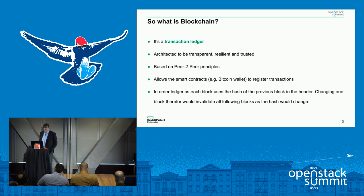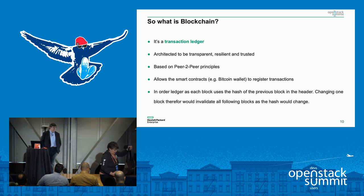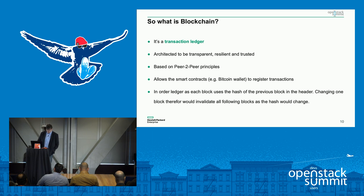To sum it up, the blockchain part of this story is the transaction ledger itself — the record of accounts that's maintained. It's architected to be transparent, resilient, and trusted. Everybody can see what's going on within the blockchain at any point in time — it's not something that's secret. It provides a body of evidence and proof that these transactions have happened. It's peer-to-peer, so all participating nodes talk directly to each other rather than to a centralized service. And it allows smart contracts — in this case the Bitcoin wallet — to register and land the transactions.